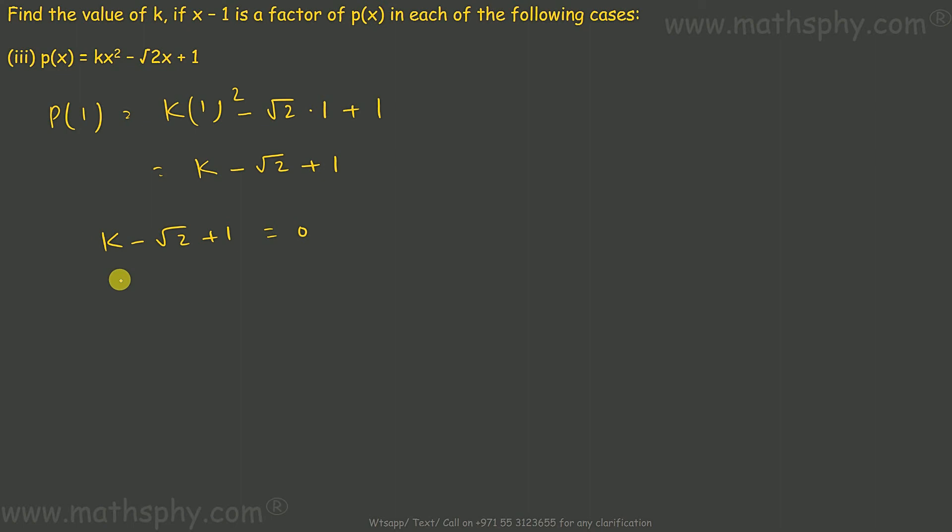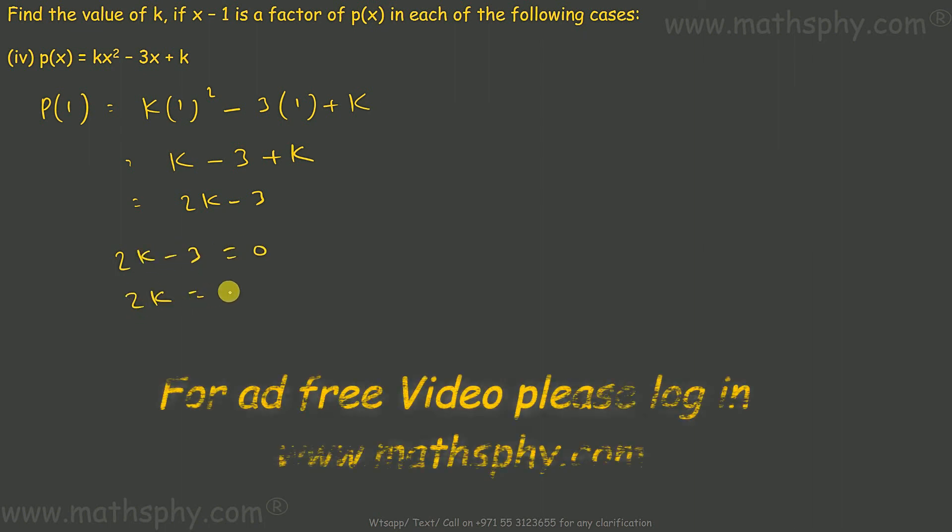This one here, same story. Replace x with 1, so this will be k times 1 squared minus 3 times 1 plus k. This comes to k minus 3 plus k, which is 2k minus 3 equals 0. So 2k would be 3, k would be 3 over 2.